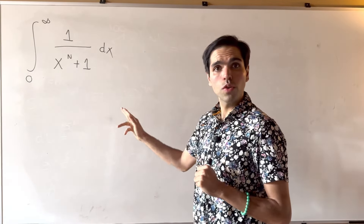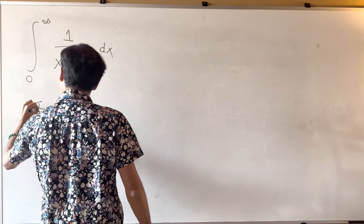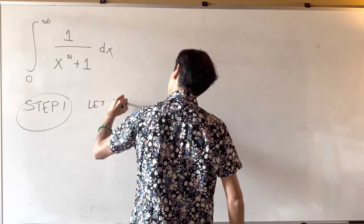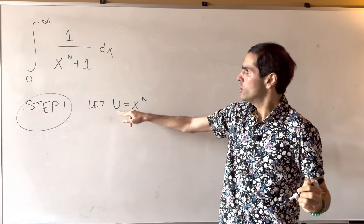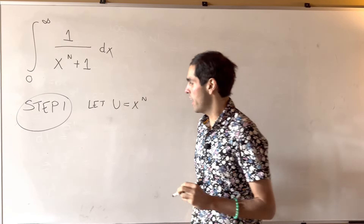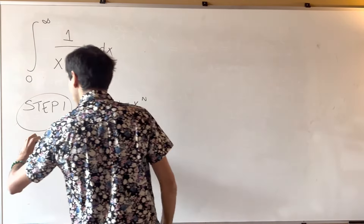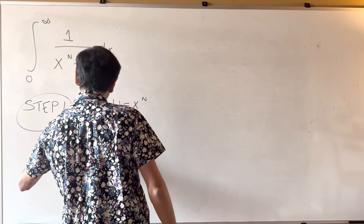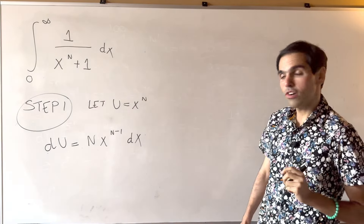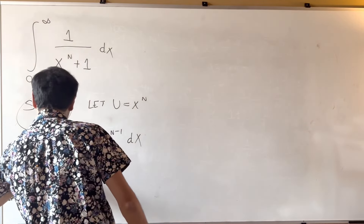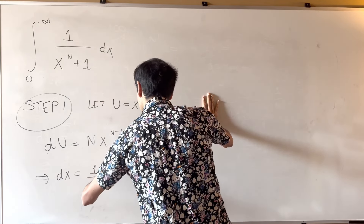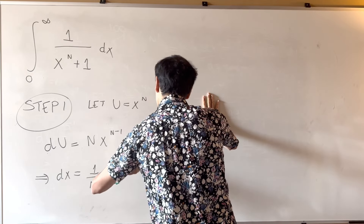In order to do this, let u be x to the n. Then u of 0 is 0, and u of infinity is infinity, because n is greater than 1. And more importantly, du becomes n times x to the n minus 1 dx. So in particular, dx becomes 1 over n times x to the 1 minus n du.